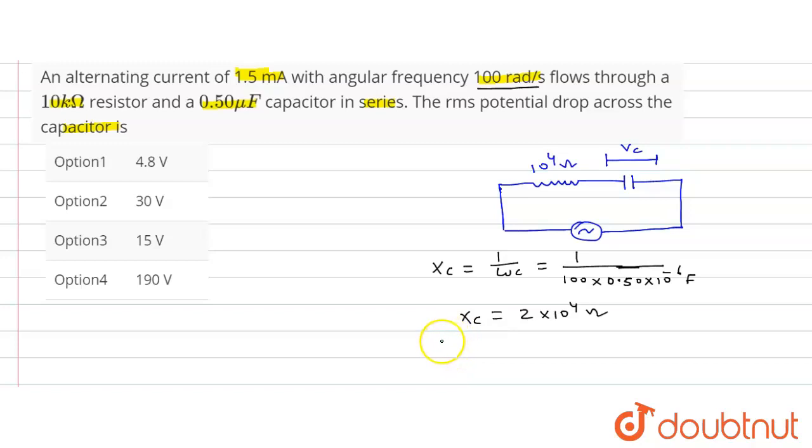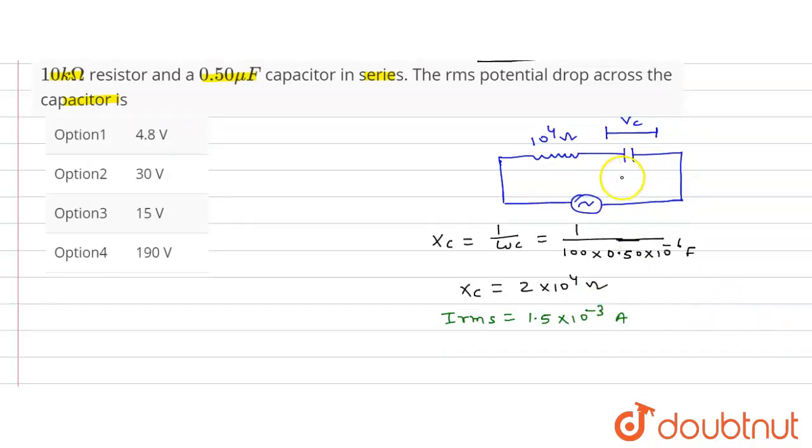So here, Irms is given 1.5 milli ampere means 1.5 into 10 to the power minus 3 ampere. So VC will be, VC is equal to current is here passing through here, so same current here because this R and C is in series, so this Irms into VC is equal to Irms into XC.